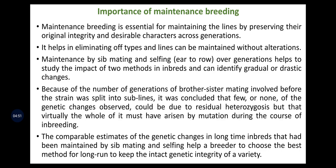Because of a number of generations of brother-sister mating involved before the strain was split into sub-lines, it was concluded that few or none of the genetic changes observed could be due to residual heterozygosity, but that virtually the whole of it must have arisen by mutation during the course of inbreeding — meaning mutation gives rise to a purging or changing population. When we talk about inbred lines, selfing may not always be a good approach, which we shall discuss in later slides.